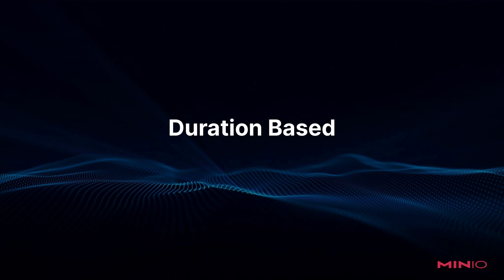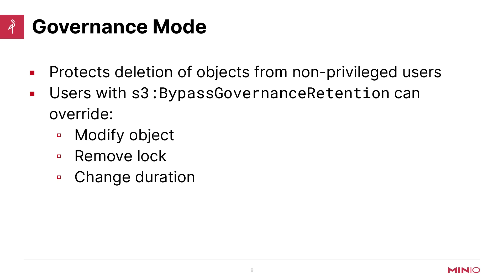What types of rules can we set? We have duration-based rules and also legal holds. Let's talk about duration-based first. You have two different types of duration-based hold. Governance mode is the first one — this protects objects from non-privileged users. If a user has the S3 bypass governance retention permission set, then it can override all of these things: it can modify the object, remove the lock, or even change the duration of the lock.